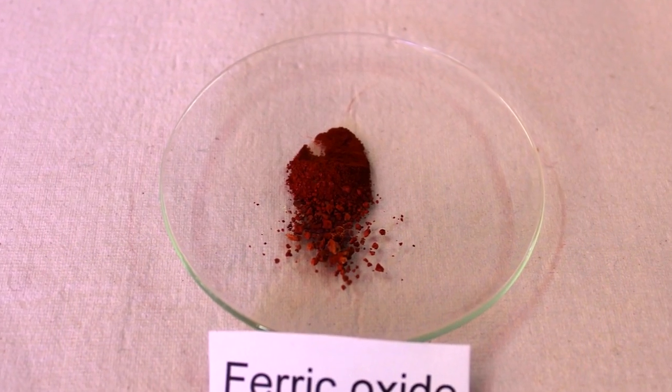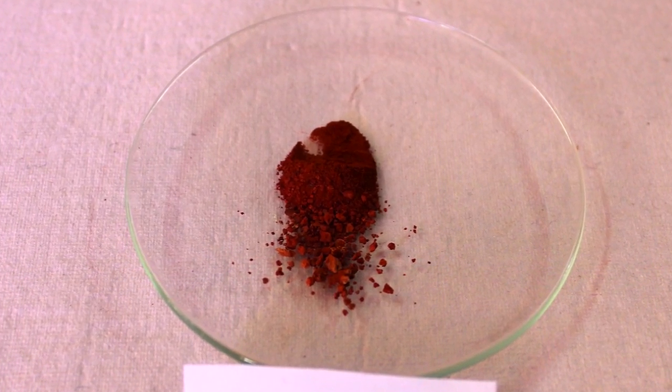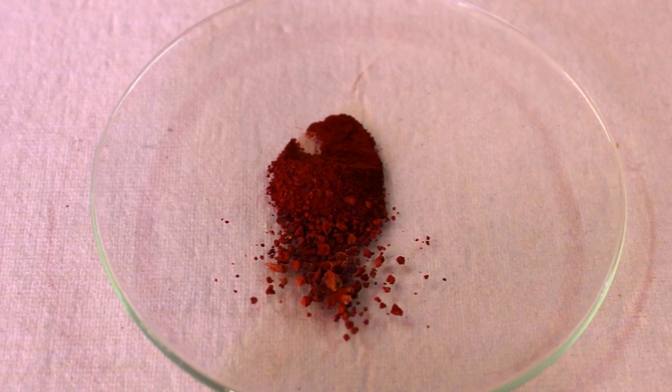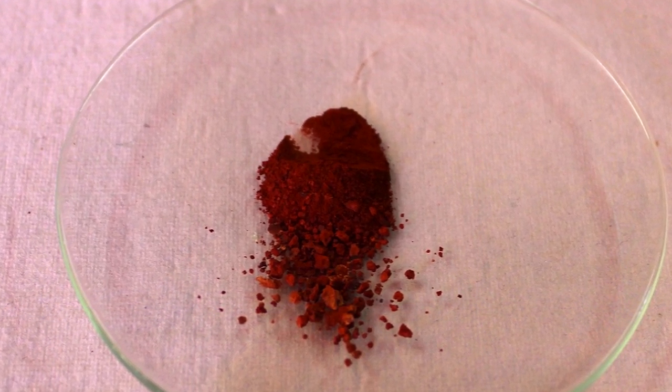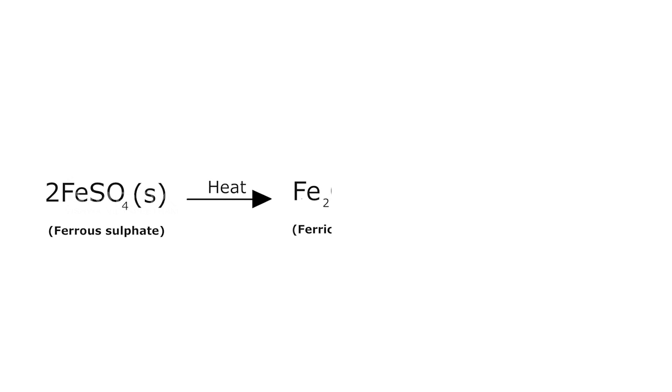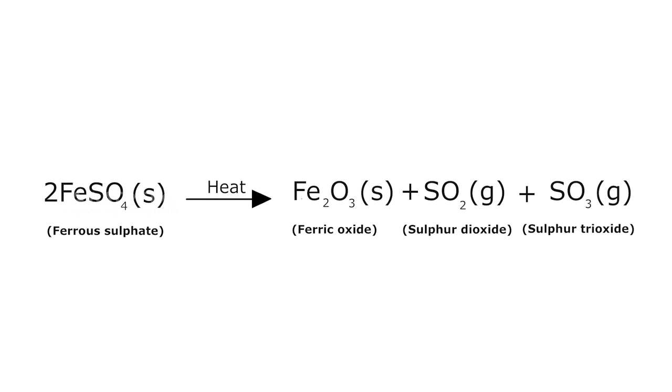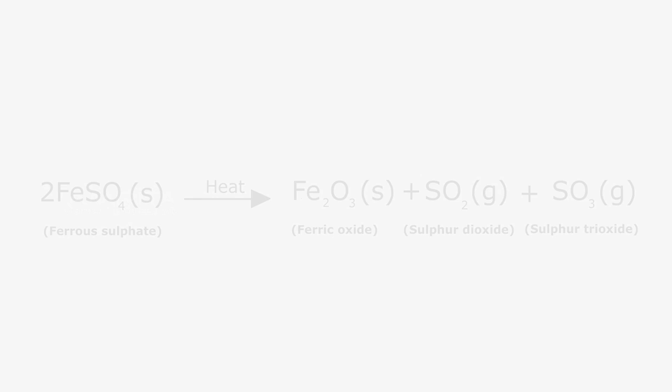From the observation, it becomes clear that this is a decomposition reaction, as a single reactant, anhydrous ferrous sulphate, breaks down to give simpler products like ferric oxide, sulphur dioxide, and sulphur trioxide.